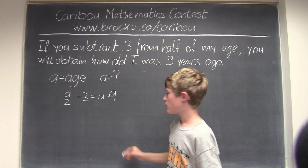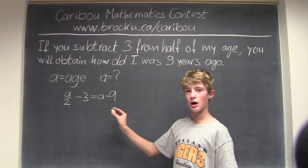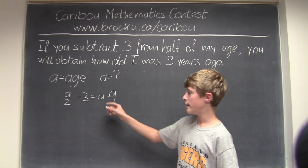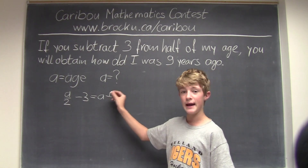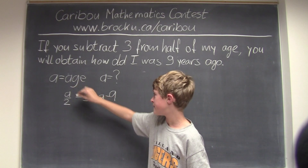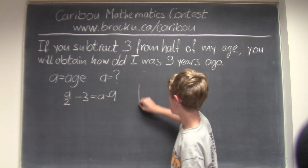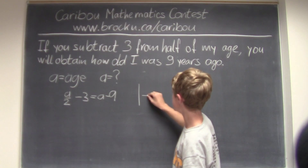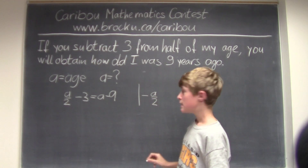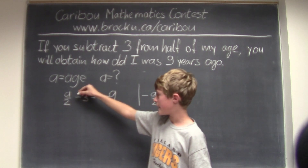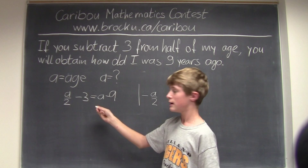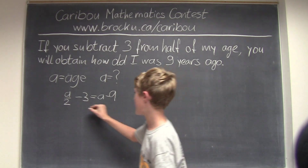We want to have the age on one side and the number on the other. But since we have age on both sides, we want to subtract A divided by 2 from both sides. If we have A divided by 2 minus A divided by 2, it would just leave minus 3 on this side.